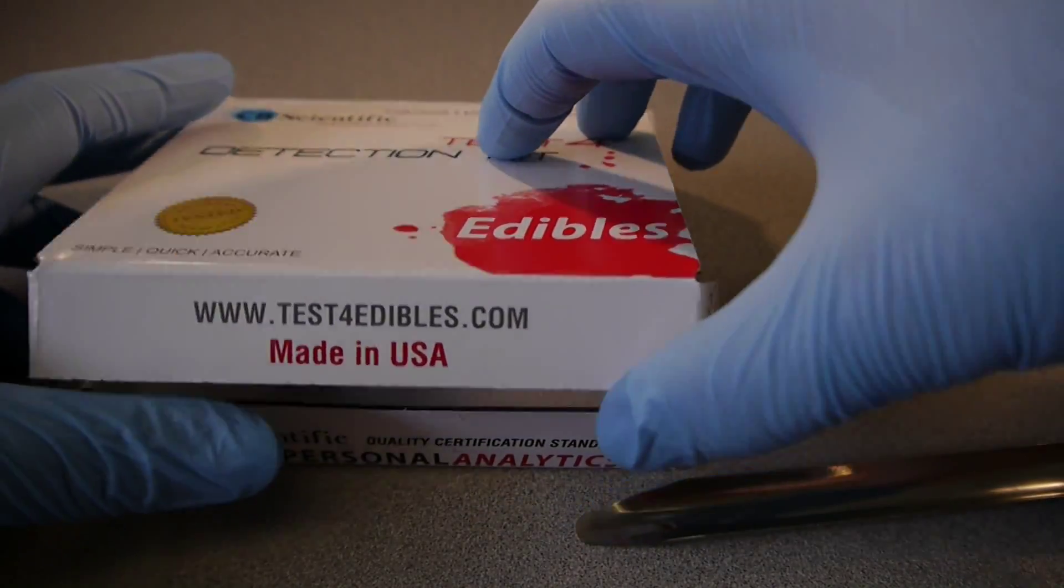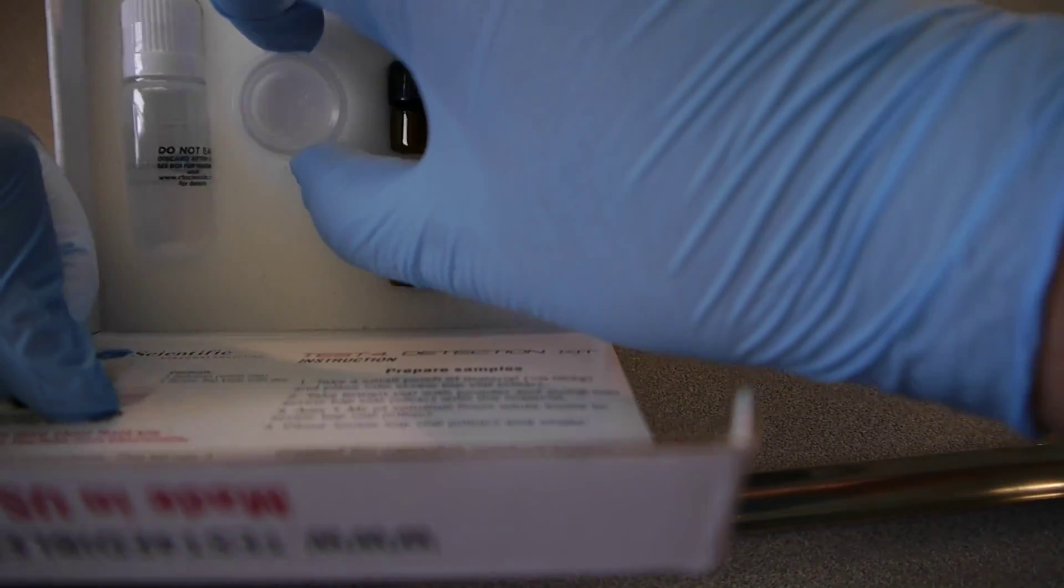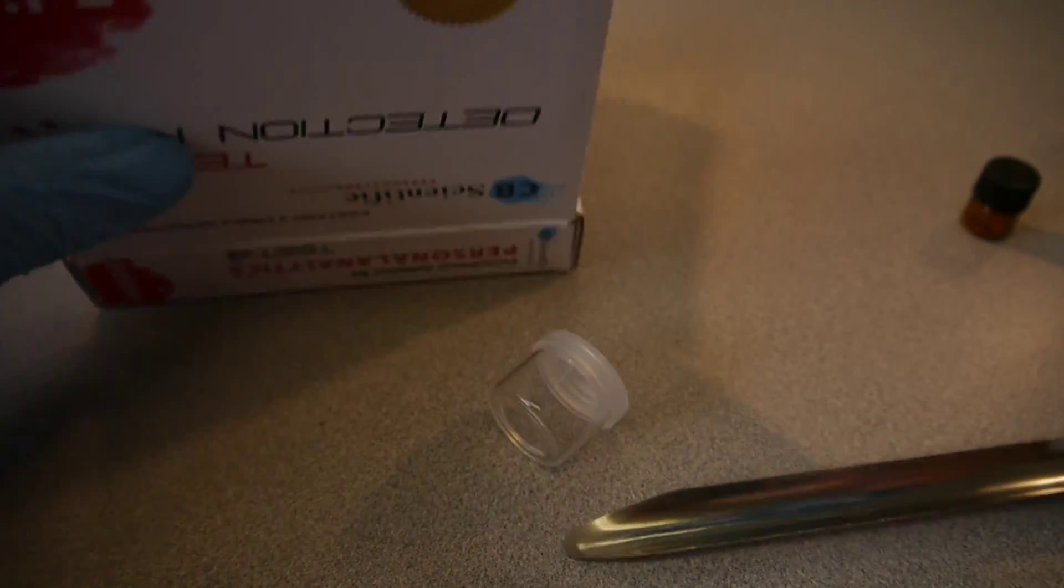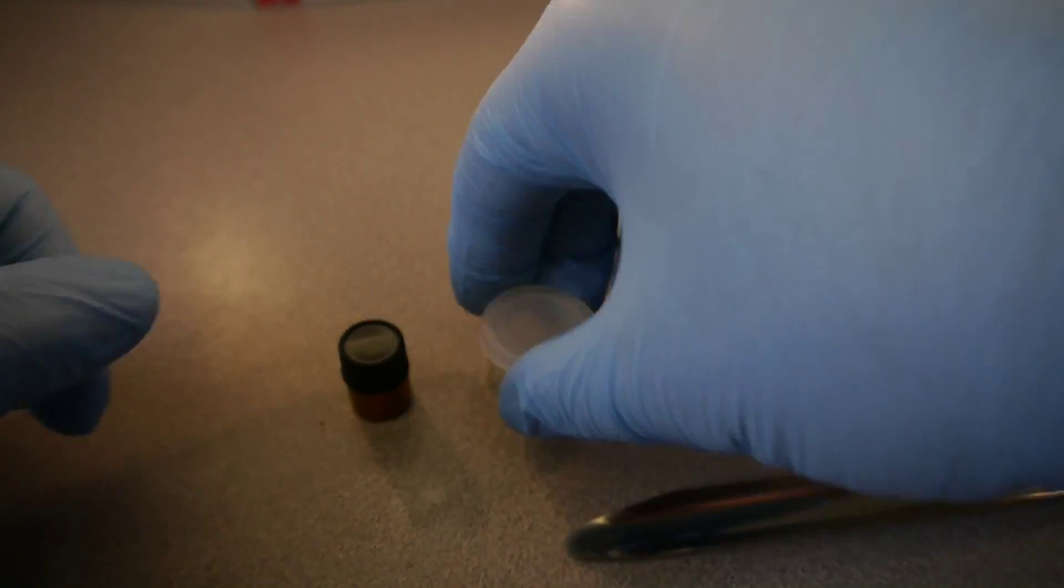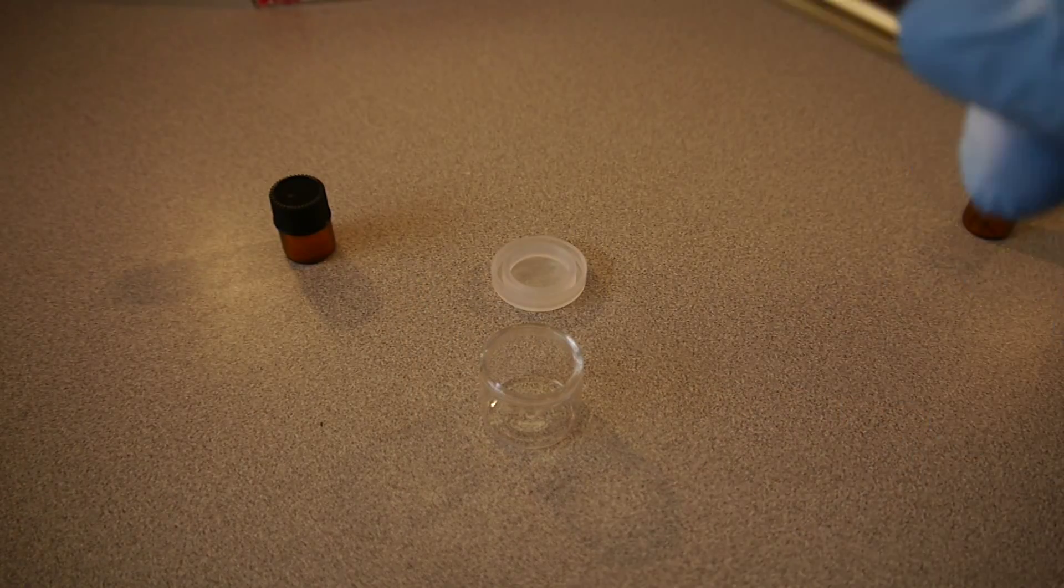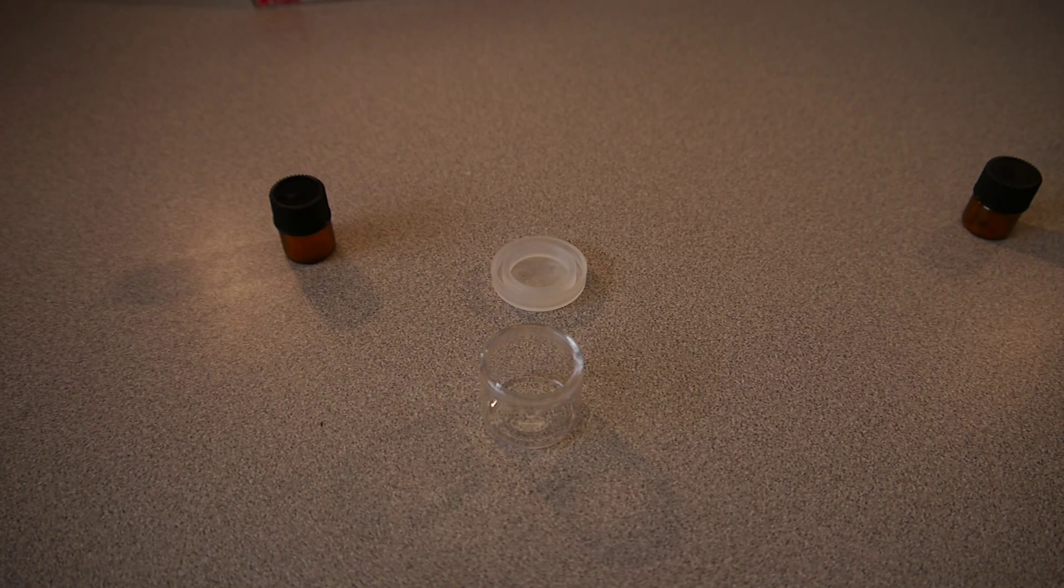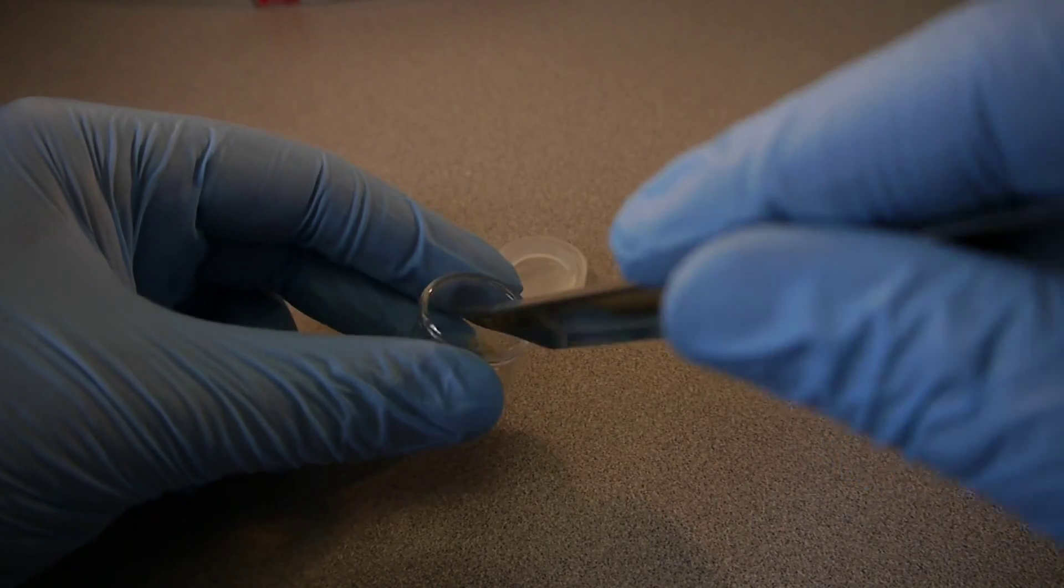And for the edibles detection kit, it works in a similar fashion. We're actually going to be doing that as well. Now, we're going to take out our little reaction vial here and put that down. We're also going to be taking out another bottle or a vial of our dye solution, and we'll open up the reaction vial, put that down, get some more of our material. Again, a very small amount is needed, it's quite necessary, put that inside.